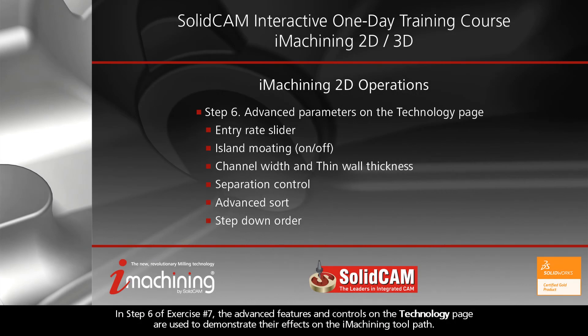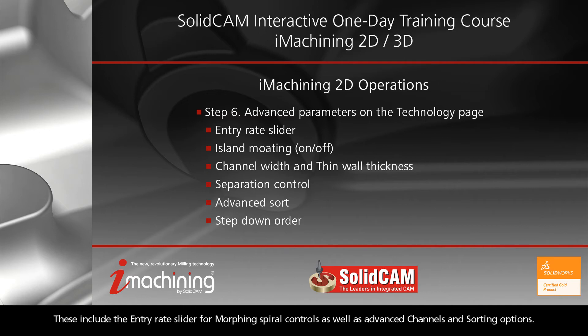In step 6 of exercise number 7, the advanced features and controls on the technology page are used to demonstrate their effects on the iMachining toolpath. These include the entry rate slider for morphing spiral controls, as well as advanced channels and sorting options.